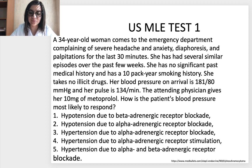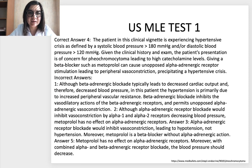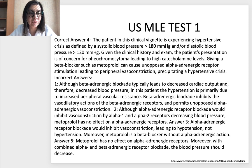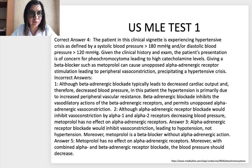The correct answer for this USMLE test is answer 4. Why? Because the patient in this clinical vignette is experiencing a hypertensive crisis, as defined by a systolic blood pressure more than 180 mmHg and/or diastolic blood pressure more than 120 mmHg. Given the clinical history and exam, the patient's presentation is of concern for pheochromocytoma leading to high catecholamine levels. Giving a beta blocker such as metoprolol can cause unopposed alpha-adrenergic receptor stimulation leading to peripheral vasoconstriction, precipitating a hypertensive crisis. All other options are incorrect.